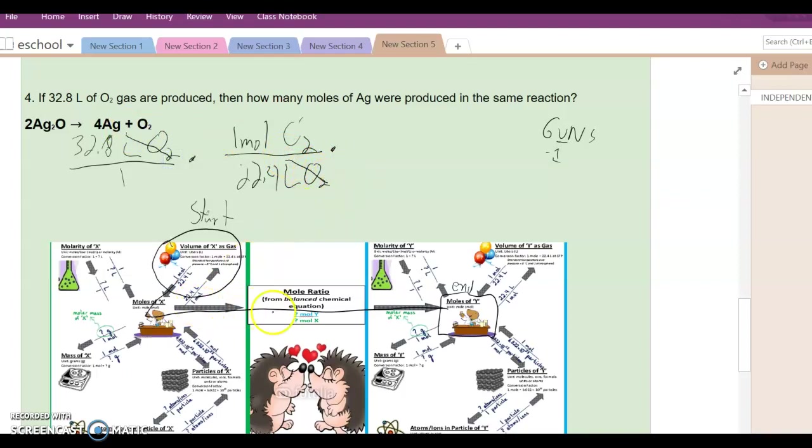Next thing, moles to moles. So I have to use my mole to mole ratio. I have to put the moles of the thing I'm looking for in the top, so that's the mole of my new thing, which is what's it asking for? Ag. Moles of Ag. And moles of what I already had on the bottom, moles of O2. Now let's see what number is that. For oxygen I have a one, there's nothing there. And for Ag I have four.